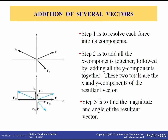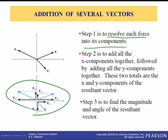When we need to add several vectors together, doing it with the parallelogram law becomes very complicated. The best way is always to break them into their x and y Cartesian components. Resolve each force into its x and y components, then add all the x components together — since they're all in the same direction, you can scalarly add them — to get the resultant in the i direction. Then add all the y components to get the resultant in the j direction.